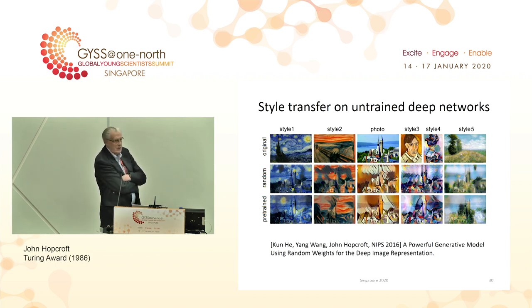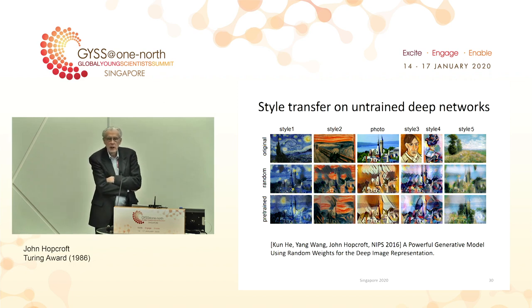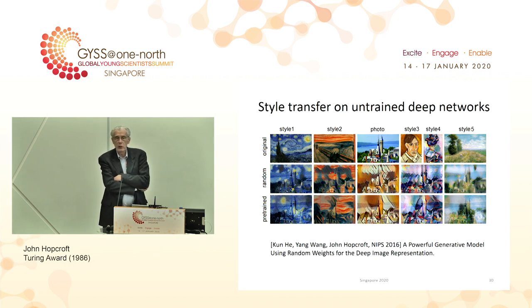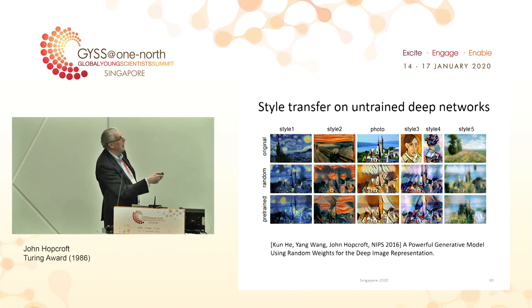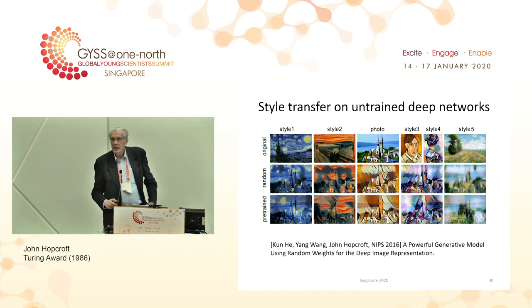Training these networks takes a lot of computer power — it might take a week or two weeks to train a network. We asked the question: for the different kinds of research we're doing, do we really need to train the network? What if we used random weights? We took an image of Cornell and some styles, and asked what this image would look like recreated by each of those styles. With a pre-trained network you get one result, but if you just used random weights, you would get just as good a result.